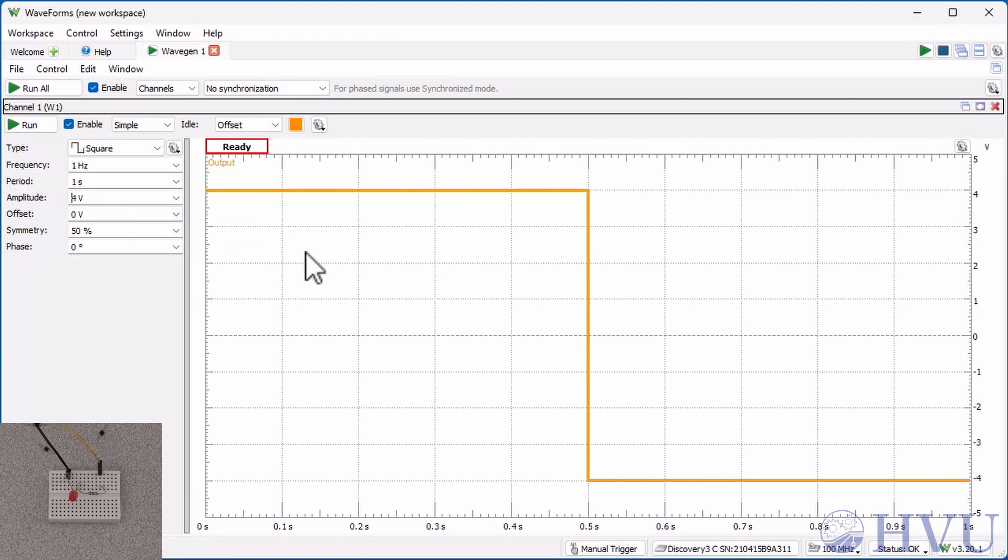Now double check our settings against the preview of the waveform. The maximum value is 4 volts and the minimum value is negative 4 volts. The average value is 0 volts, which agrees with our offset value. The voltage is high for a half a second and low for a half a second. So the frequency of the signal is 1 Hertz.